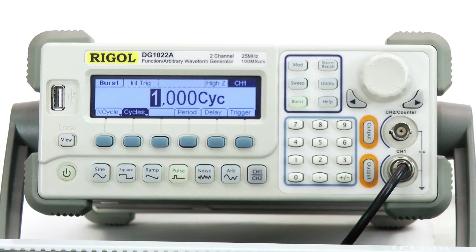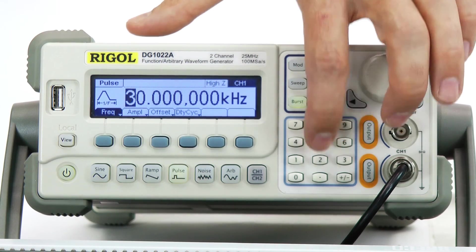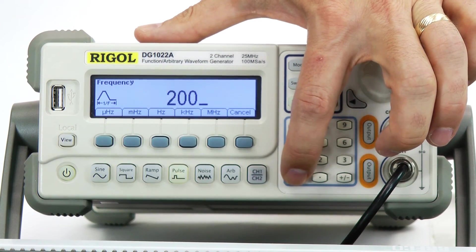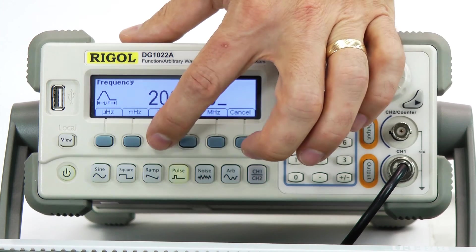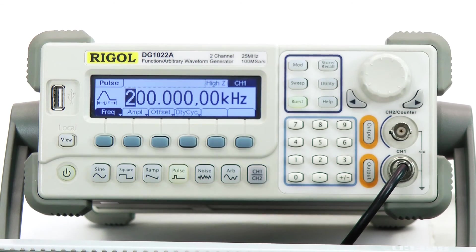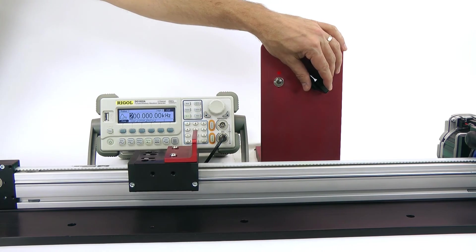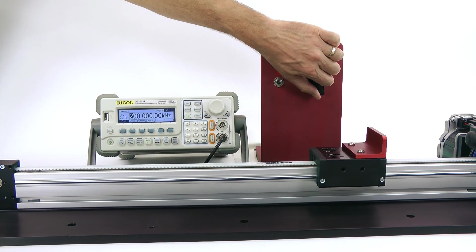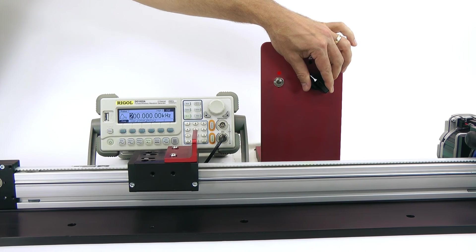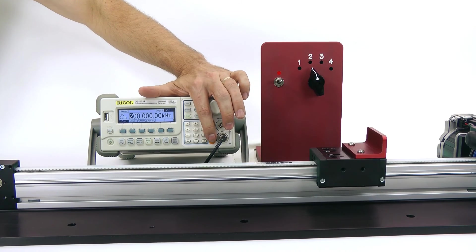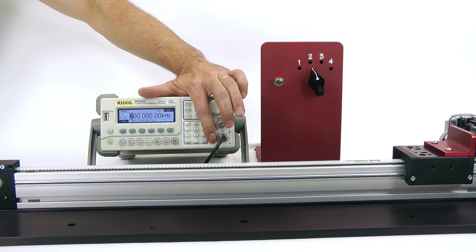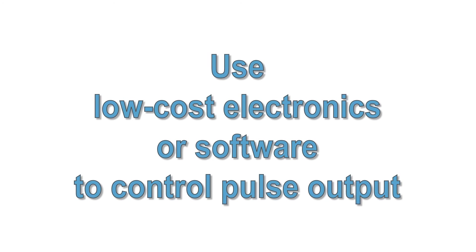The pulse bursts can be sent at a wide range of frequencies, and ClearPath will translate them on the fly into the same smooth motion profile. I can put in a much higher pulse frequency and the moves are still the same as before. Because the pulse frequency and jitter has no effect on the profile, you can use low-cost electronics or even software to control the pulse output.